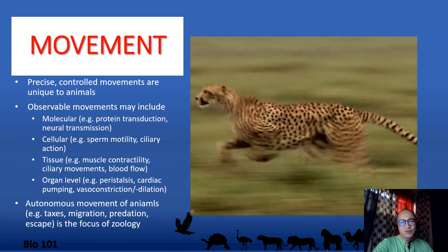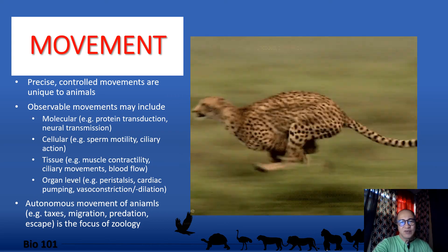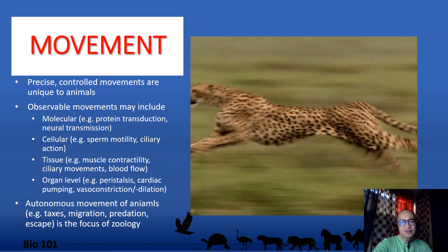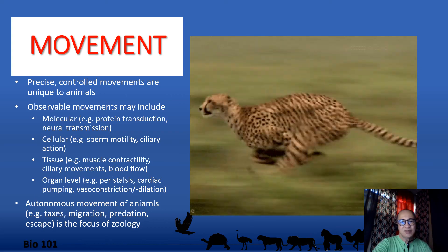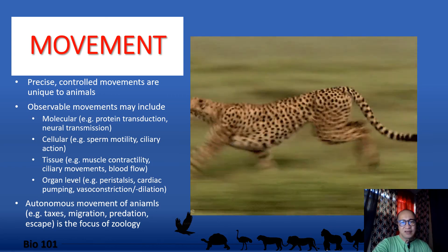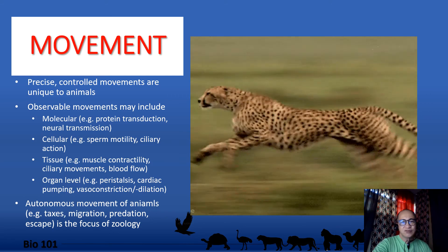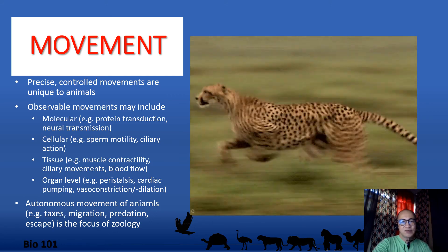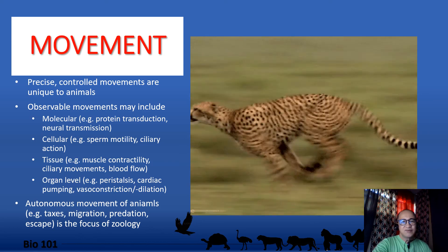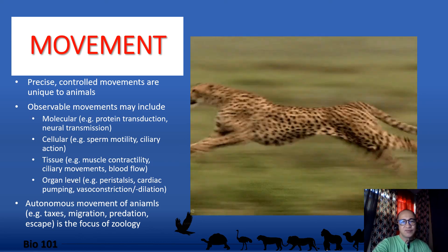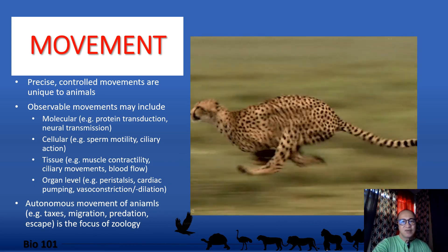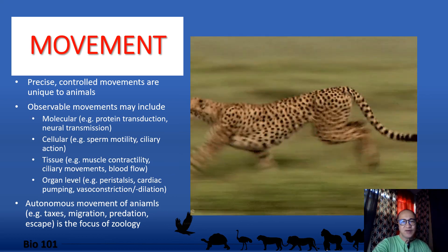Rapid, precise, and highly controlled movements are unique to animals. Movements may also be observable at subcellular and cellular levels. Semi-autonomous molecular movements, such as those of enzymes and membrane transport proteins, are important to cell functions. Movements at the cellular level, such as sperm motility and ciliary movements, are essential for reproduction, growth, and development. Autonomous movements of animals are the crux of study here because animal movement is so diverse and different adaptations have evolved for locomotion. On a larger scale, animal migrations over long distances are equally important topics because these mass movements are critical to survival of the species.